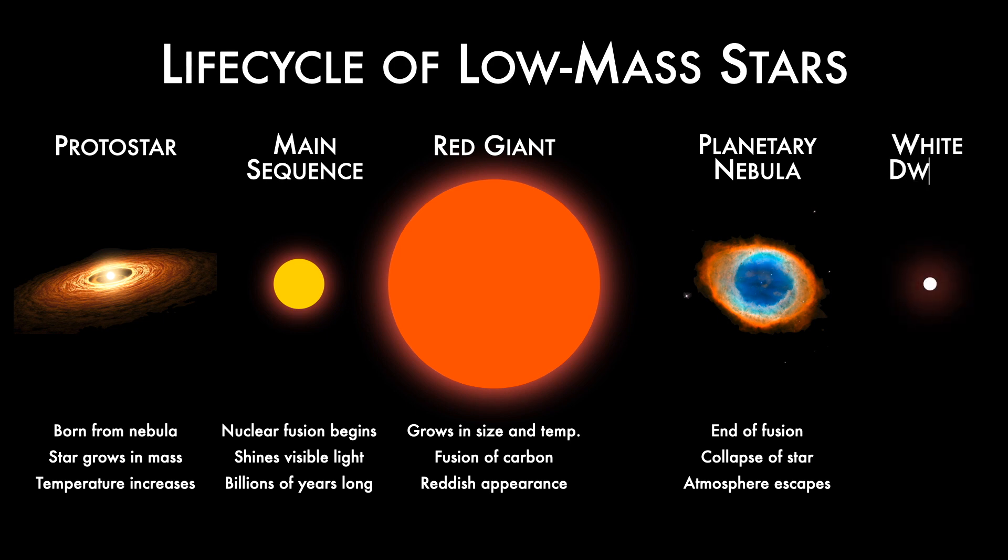After the end of nuclear fusion, the low-mass star can no longer support itself. Gravity collapses the remaining matter down to about the size of Earth. The star will glow white-hot due to any leftover energy from its long life cycle. The resulting white dwarf star will continue to cool and will dim into darkness over trillions of years. This is how the sun and many of the stars that we see in the sky will ultimately complete their lives.